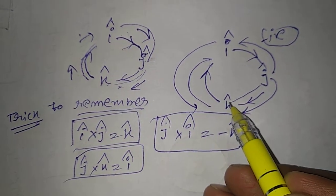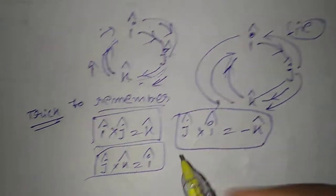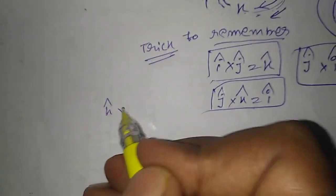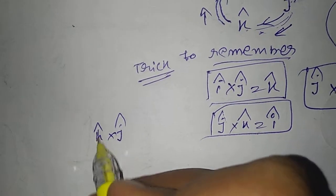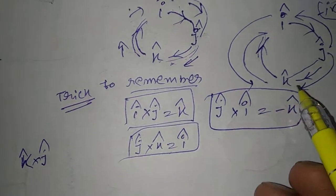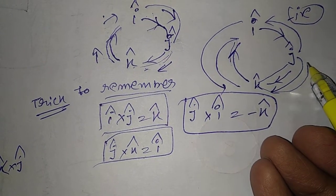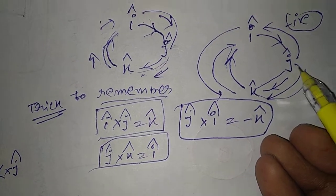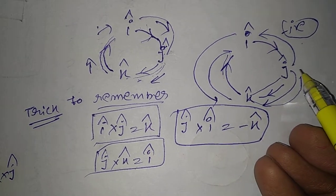In that way, if I do K cross J, then what will happen? K is opposite to the clockwise direction, and opposite means negative. And opposite to J is what? I. So K cross J equals minus I.